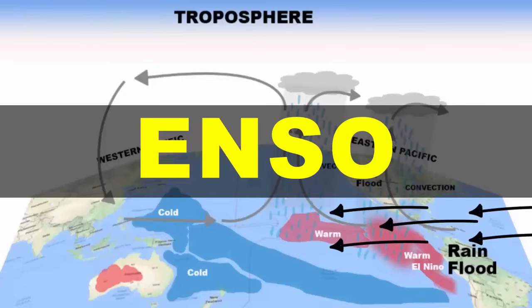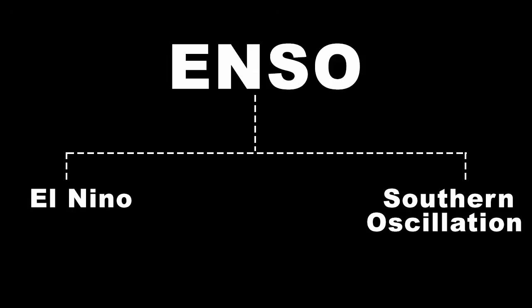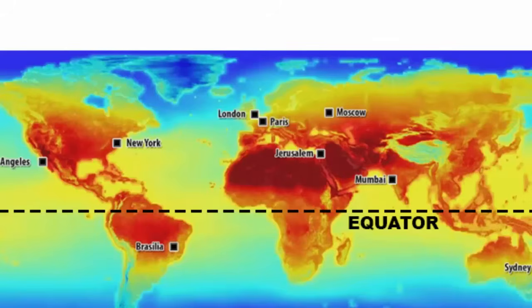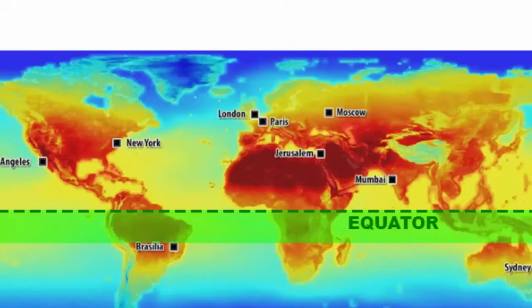In this video, we are going to learn about ENSO. If you break it down, EN stands for El Niño and SO stands for Southern Oscillation, because ENSO phenomena mostly occurs at the Southern Hemisphere, just right below the equator.